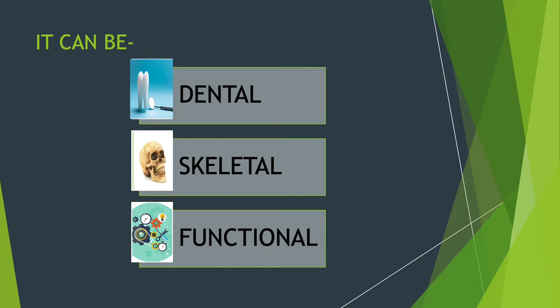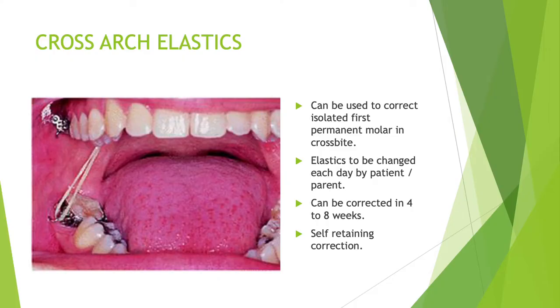There can also be a situation where the teeth are fine and the skeleton is fine, but there is a functional shift in the lower jaw. This means there is some interference while the patient is closing the mouth, and to avoid that interference the lower jaw shifts to a position with no interference. In that case it is a functional shift, causing the teeth to be in a crossbite relation.